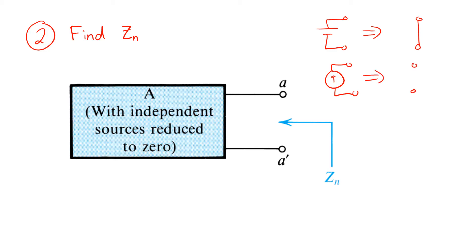Again, dependent voltage and current sources can remain just as they are.